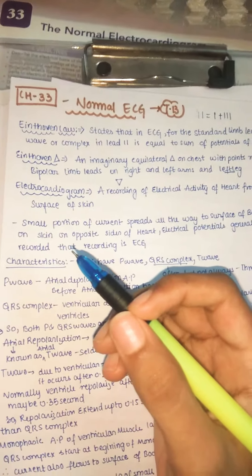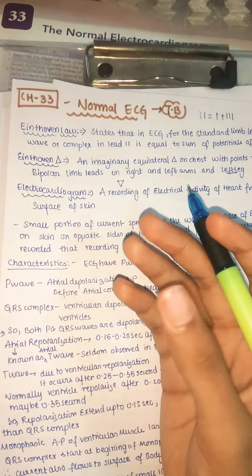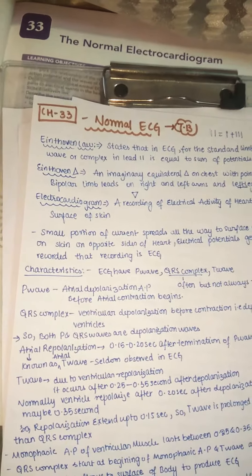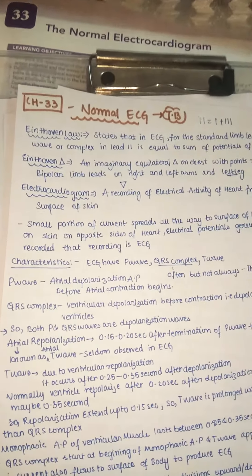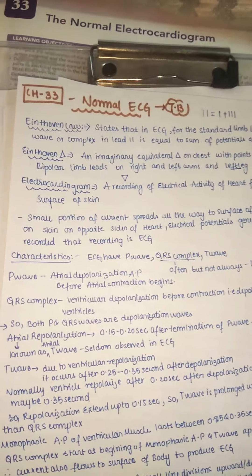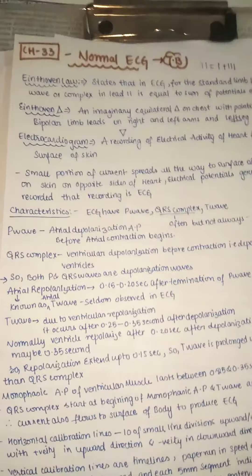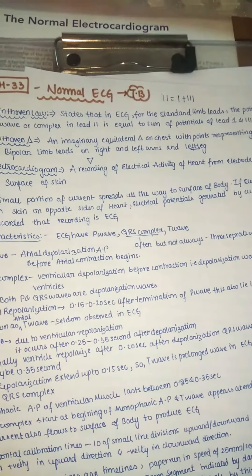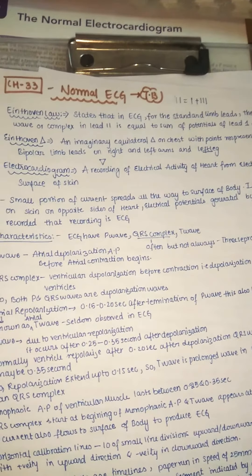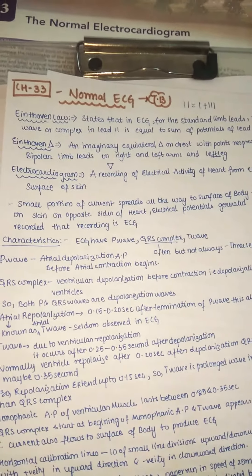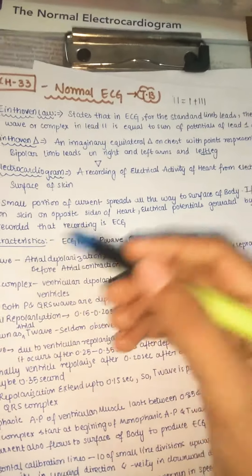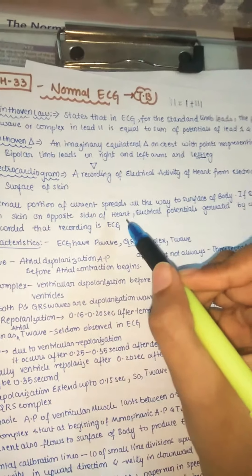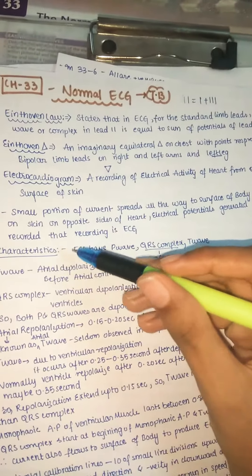You may wonder: the electrical activity of the heart is within the heart, so how can we measure it at the body surface? We know that fluids fill our body — extracellular and intracellular fluid. The same action potential travels through these fluids from the heart outward. Of course, the signal is much higher near the heart, but a small portion of current spreads all the way to the surface of the body. Even with that small current, we can record the ECG waves.